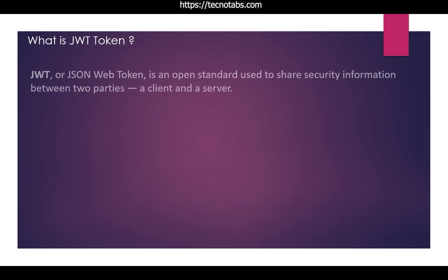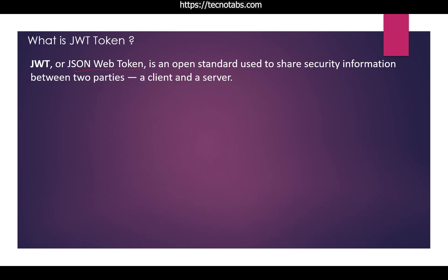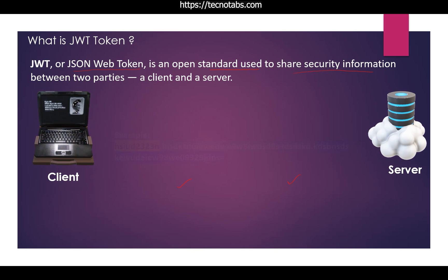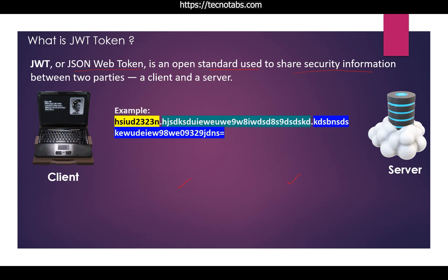So what is a JWT Token? JWT stands for JSON Web Token, which is an open standard used to share security information between two parties — the client and the server. A JWT Token has a dot-separated format with two dots in between. The first part is the header, the second part is the payload, and the third part is the signature. Anywhere you see a format like this, you can think of it as a JWT Token.